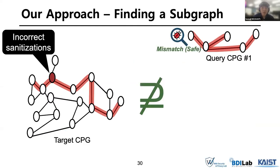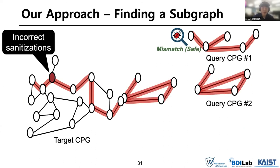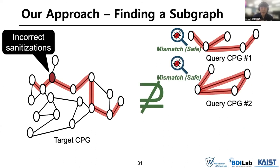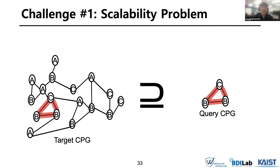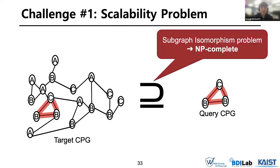For example, query CPGs 1 and 2 are not subgraphs of the target CPG, so we can see that the application is safe from those bugs. However, query CPG 3 is a subgraph of the target CPG, meaning we found a bug corresponding to that known vulnerability. Unfortunately, there are two challenges to realize our approach. First, this matching problem is known as the subgraph isomorphism problem, which has NP-complete nature.